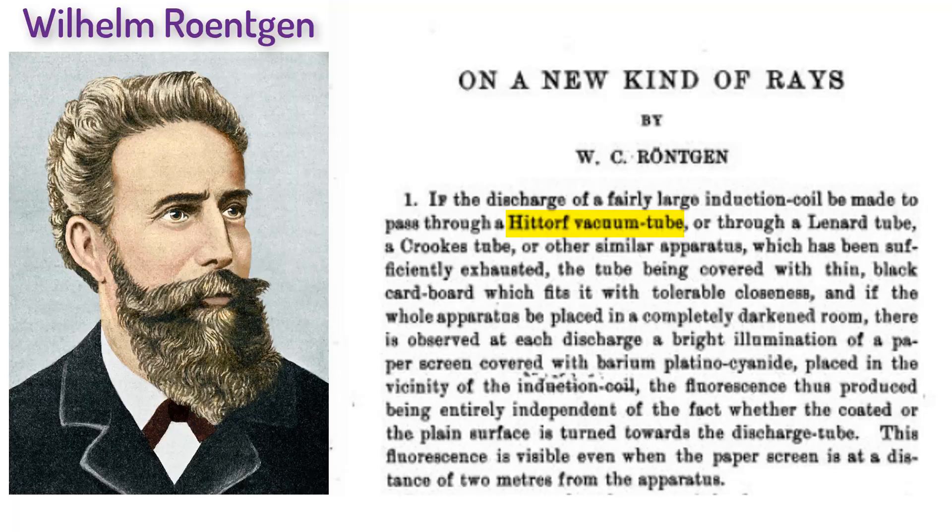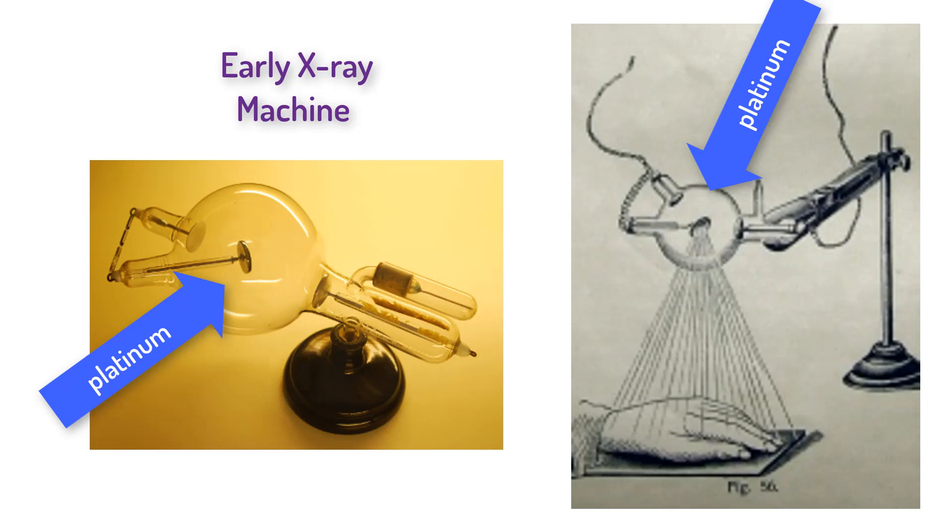Röntgen then found that all of his tubes would make X-rays, whether the cathode ray hit aluminum or glass. By the way, it wasn't until after Röntgen's first publication that many people, including Röntgen, found out that hitting low mass materials like aluminum and glass produces far less X-rays than hitting high mass materials like platinum. For this reason, within months of Röntgen's publication, X-ray machines were made that used a focused cathode on a piece of platinum. However, that was not what Röntgen used in 1895.